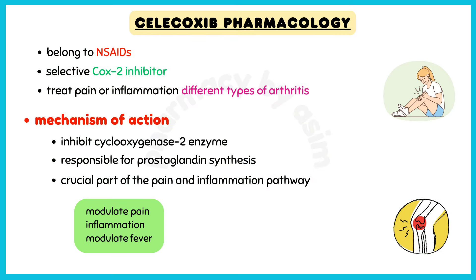Celecoxib belongs to a group of medications known as NSAIDs. It is a selective COX-2 inhibitor drug. Celecoxib is used to treat pain or inflammation caused by many conditions, like different types of arthritis.